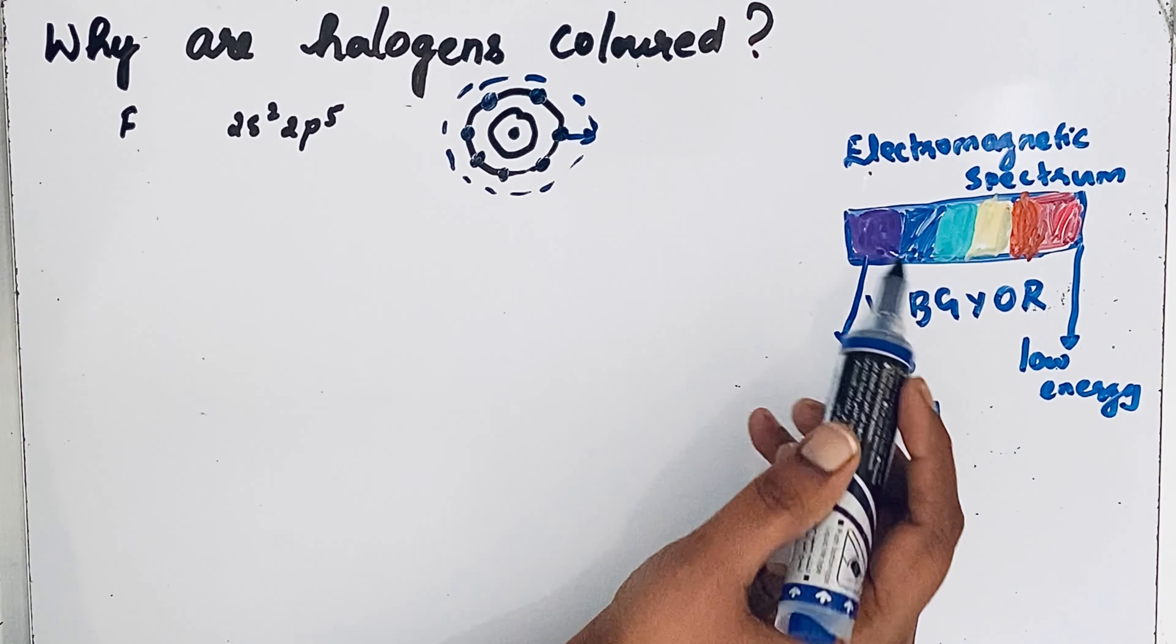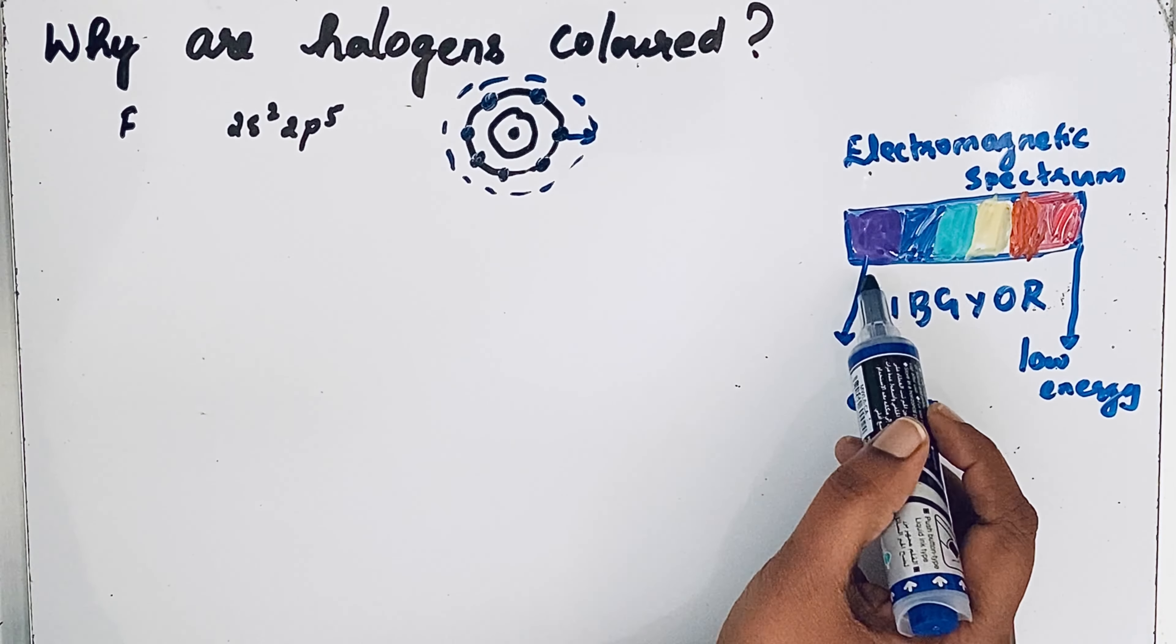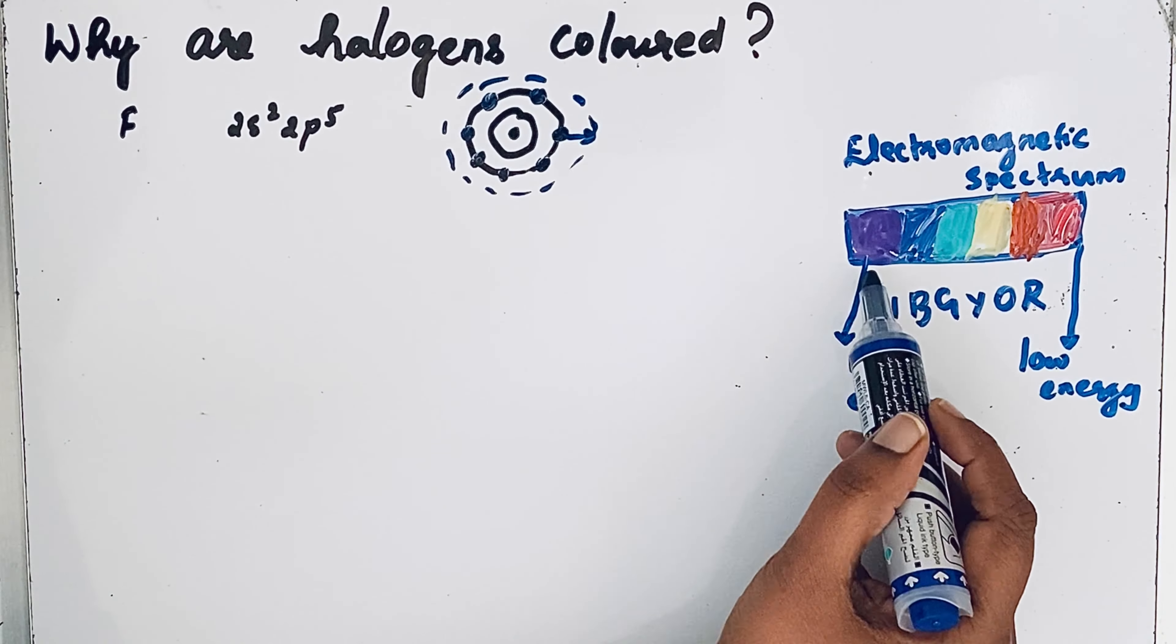In the electromagnetic spectrum, you can see the colors. Violet has high energy, and these are the low energy colors. Fluorine has a smaller atomic radius, so it needs more energy. That is why the valence electrons of fluorine absorb high energy violet rays and emit low energy yellow. Hence, fluorine is yellow in color.